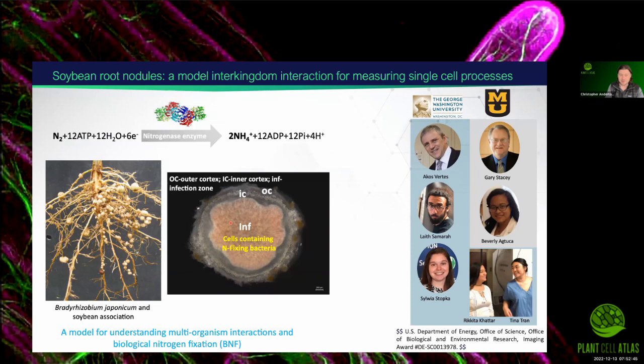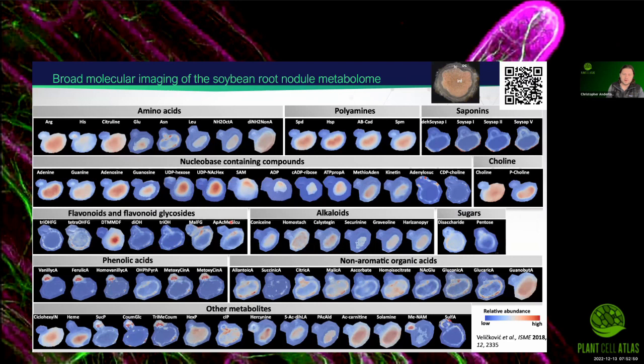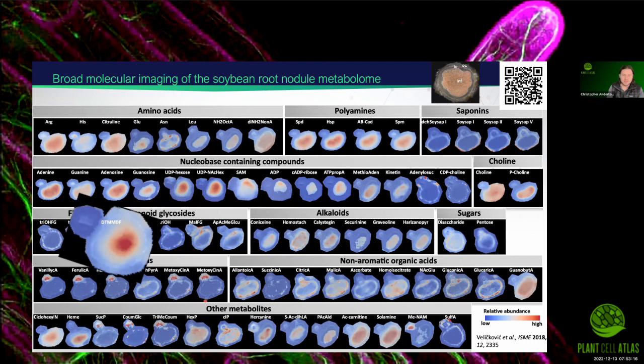One of the first implementations was that we showed we can do broad molecular imaging of the soybean root metabolome using matrix-assisted laser desorption ionization — MALDI-MSI. If you're interested in how that technique works, Dushin goes into detail in his talk. One of the things we can see is that we can identify molecules that localize to within the infection zone, deep within the infection zone, usually where there are more anaerobic conditions.